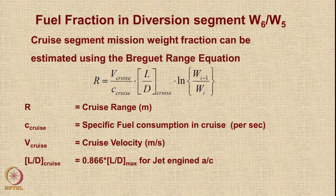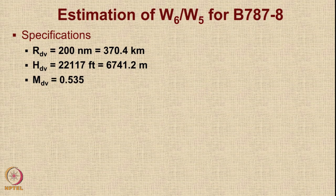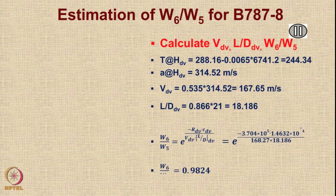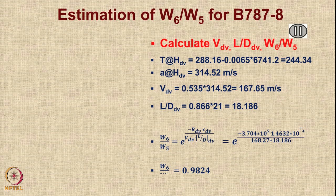The diversion segment is like a cruise segment, so the same Breguet range formula applies with L/D_cruise = 0.866 × L/D_max. The diversion distance is 200 nautical miles at 23,117 feet at Mach 0.535. The temperature at that altitude is calculated using the standard lapse rate, then the speed of sound A = √(γRT) gives V. With these values, W6/W5 = 0.9824.